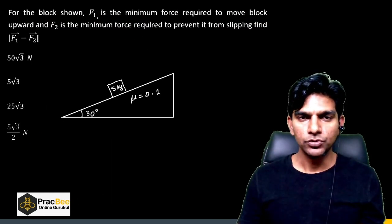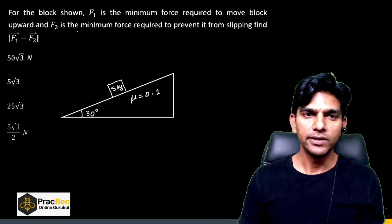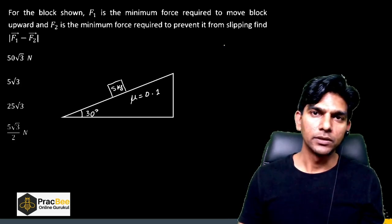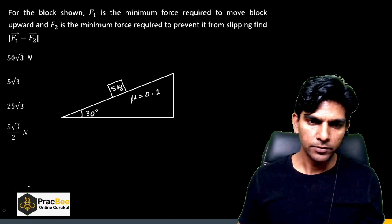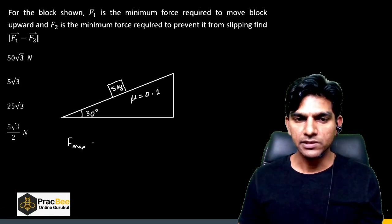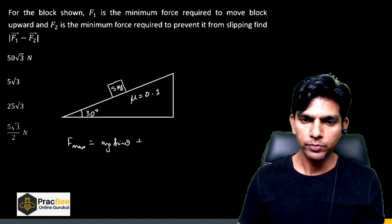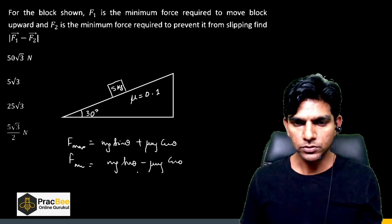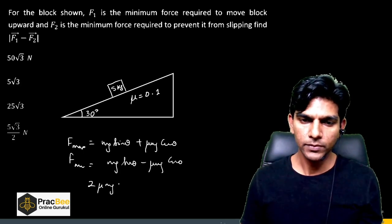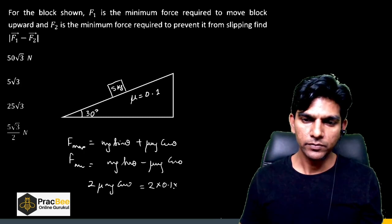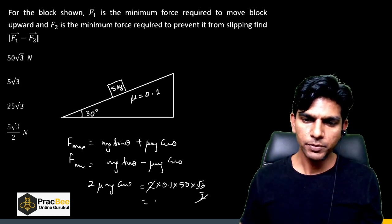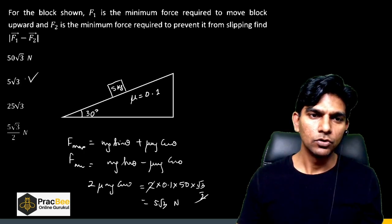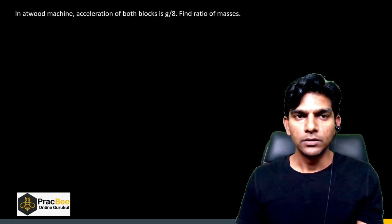The next question is from Newton's Laws — the wedge-block arrangement. F₁ is the minimum force required to move the block upward and F₂ is the minimum force to prevent slipping. F₁ = mg sinθ + μmg cosθ and F₂ = mg sinθ − μmg cosθ. Their difference is 2μmg cosθ. With μ = 0.1, m = 50 kg, and cos30° = √3/2, this gives 5√3 N. Option B is the answer.